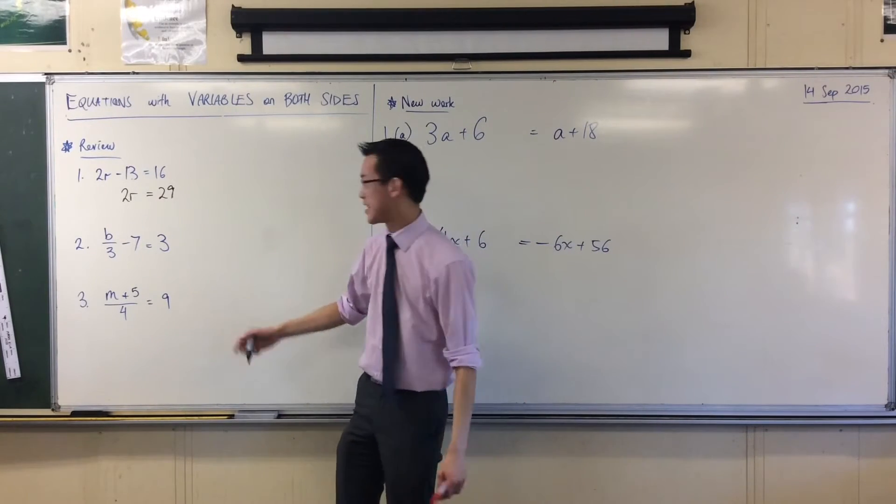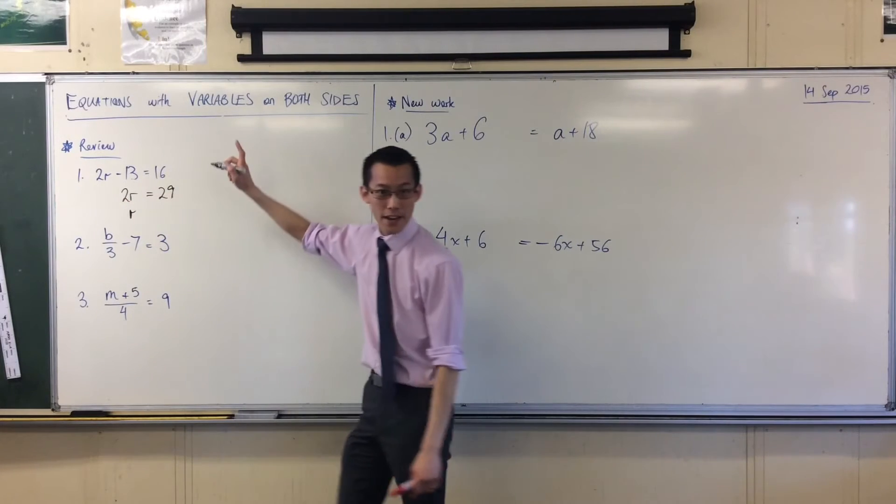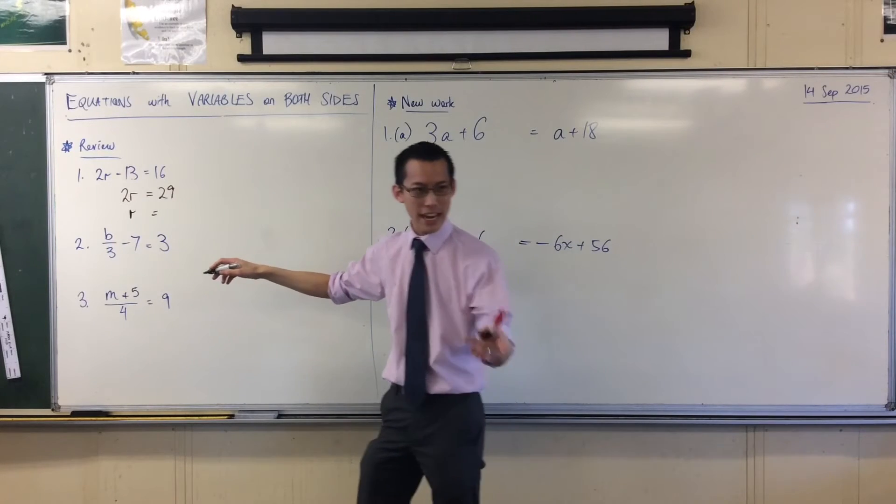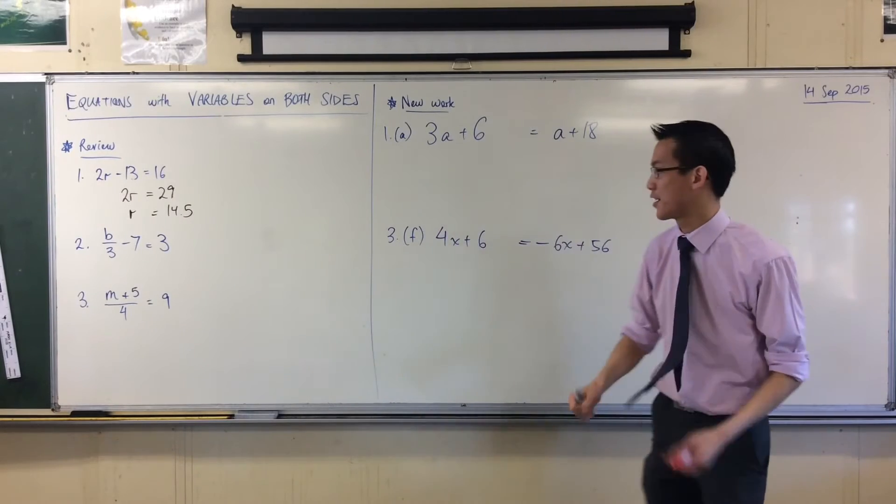Yeah, Adam? Fantastic. If I divide this by 2, I'll just be left with R. And if I divide that by 2, 29 divided by 2, 14.5 or 14 and a half. They're both just different ways of writing the same thing. Thumbs up. Okay, very good.